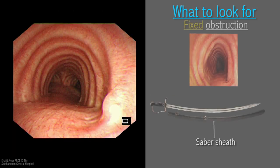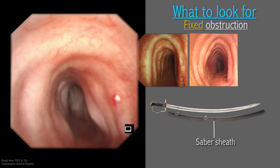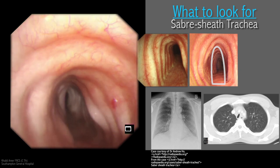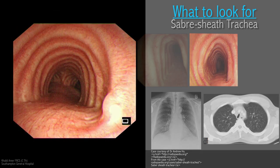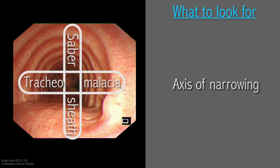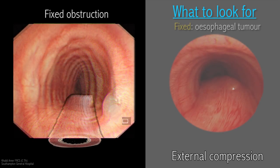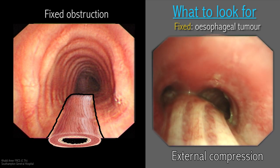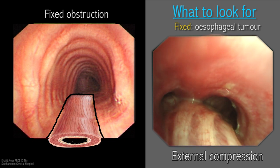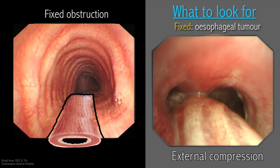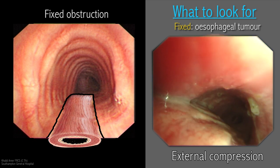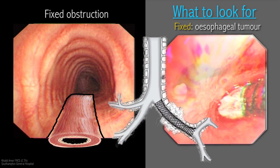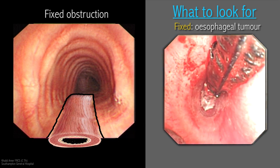Saber-sheath trachea is not an uncommon condition characterised by diffuse lateral narrowing of the trachea with concomitant increase of its anteroposterior diameter, with chronic obstructive pulmonary disease as the main aetiology. When ossification of the tracheal rings takes place, the dynamic obstruction becomes fixed. Anatomically, the oesophagus is in contact with the membranous part of the trachea. Tumours of the oesophagus have the tendency to involve the membranous part, especially around the carina. A non-covered stent might be required to keep the airways patent; a covered stent might be needed for tracheoesophageal fistula. Be aware that inserting an oesophageal stent in these conditions might worsen the tracheal obstruction, posing a threat to life — a tracheal stent should be considered first.